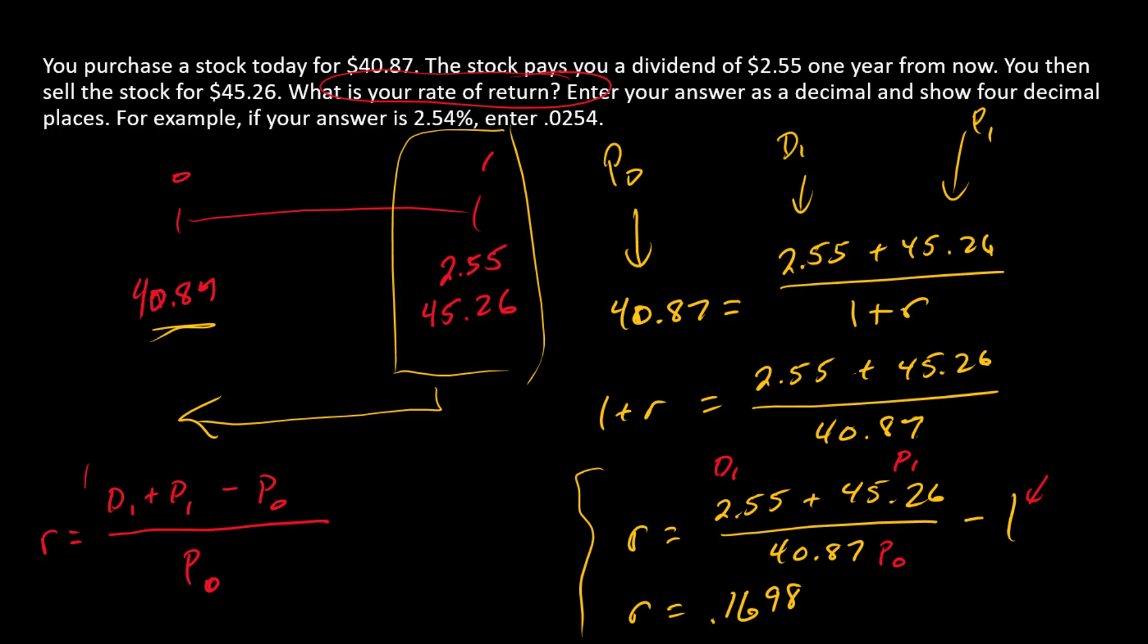Thinking about this intuitively, here in the numerator we have the dollar gain. So the dollar gain is going to be the sum of the dividend and the new price minus the old price, and over here we just have the starting price. It's a little bit more intuitive to think about it this way. Either way we're going to get to the same answer.